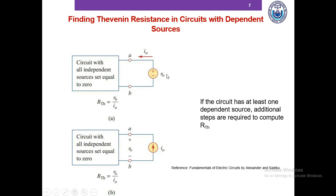Instead of a voltage source, you can also connect a known independent current source I0, usually 1A, at terminals A and B. You then compute the voltage V0 across that current source, and take the ratio of V0 and I0 to get the Thevenin resistance.